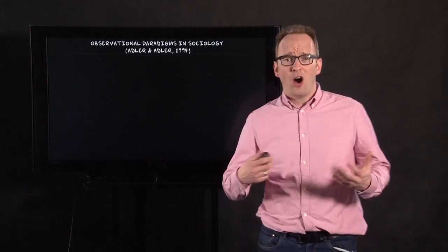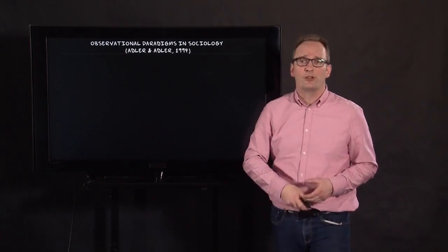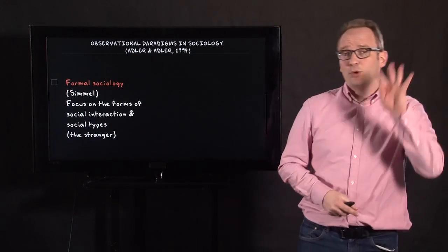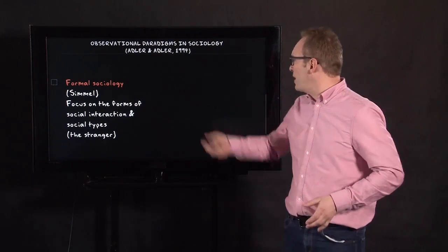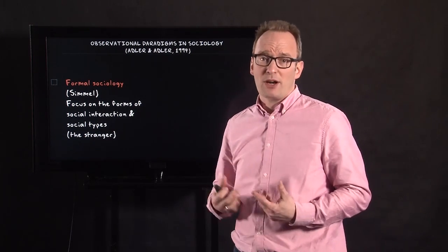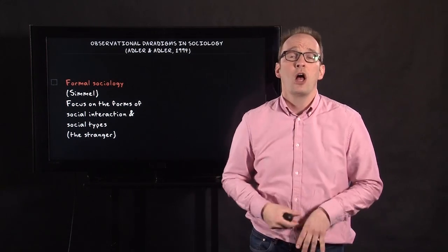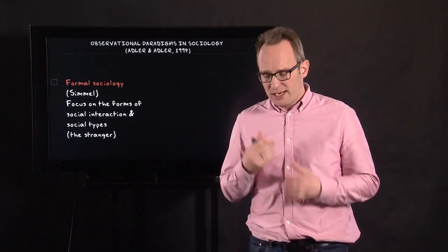So how do social scientists think about observation, and what are the observational paradigms? Adler wrote a nice chapter on observational paradigms in sociology, making a distinction between five different paradigms. The first and most classic paradigm is Simmel's paradigm of formal sociology. The focus of Simmel was on the forms of social interaction rather than the content.